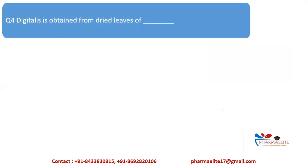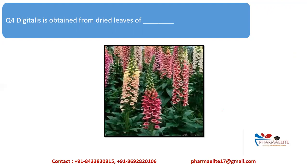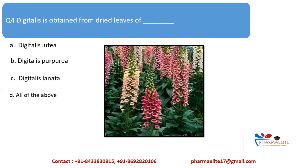Digitalis is obtained from the dried leaves of which plants? This question asks about the source of Digitalis. We have studied that Digitalis has multiple sources: D. lanata, D. purpurea, and D. lutea. The question asks whether it is A, B, C, or all of the above. Since all three — Digitalis lutea, Digitalis purpurea, and D. lanata — are correct, the answer is option D: all of the above. You can refer to Kokate and Rangare's pharmacognosy textbook for detailed information.